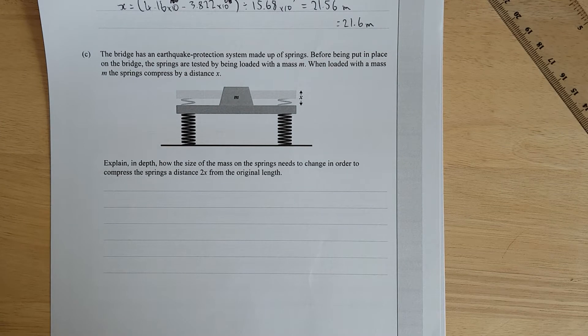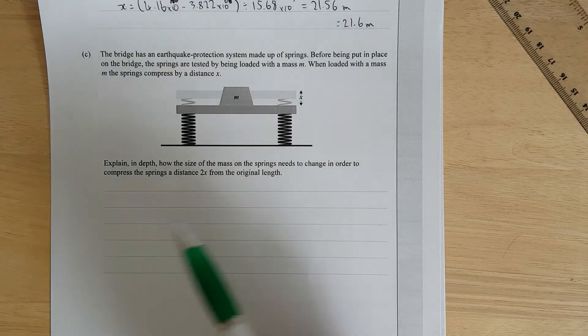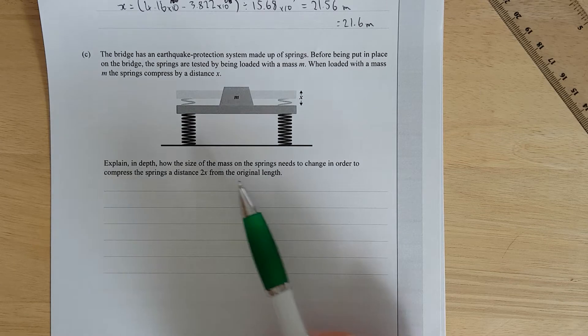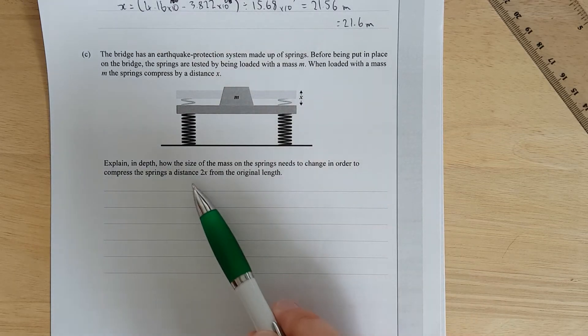The bridge has an earthquake protection system made of springs. Before being put in place on the bridge, the springs are tested by being loaded with mass M. Explain in depth how the size of the mass of the springs needs to change in order to compress the springs a distance two times from the original length. I'd say double off the top of my head.